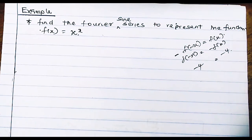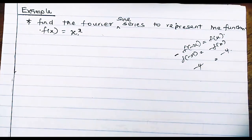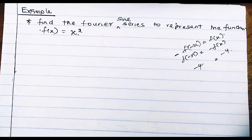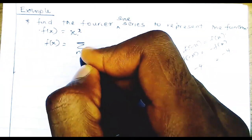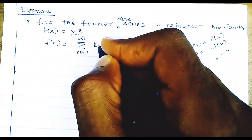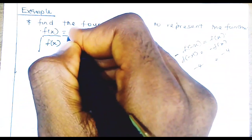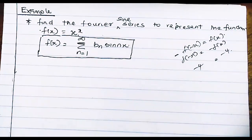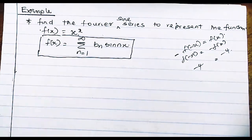Since x squared is assumed to be an odd function, we can use the Fourier series for odd functions. As we said on our last video, the Fourier series for an odd function only contains sine terms and can be written as the summation from n=1 to infinity of bn·sin(nx). We will use this formula to get our Fourier series.